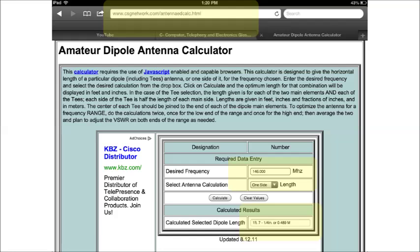I used the pull down menu to get the length for one side of the antenna, and that came out to be 19 and a quarter inches. Then I went ahead and pulled the jacket off and made the two sides.